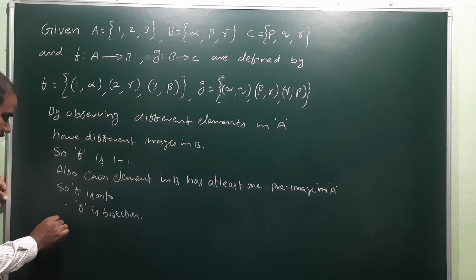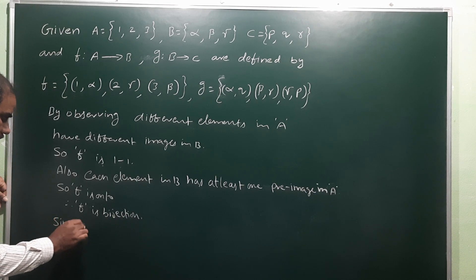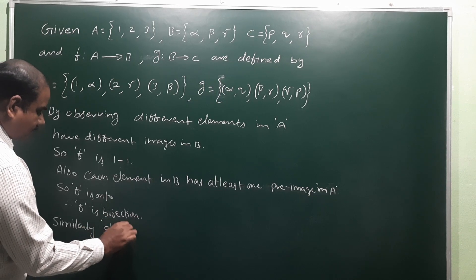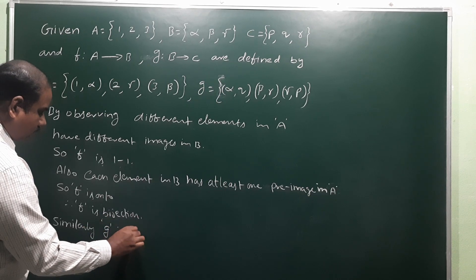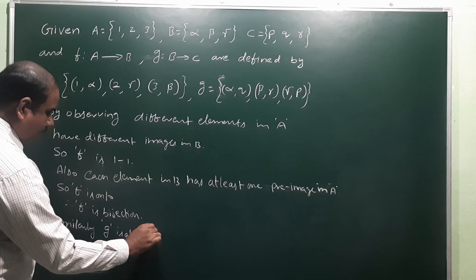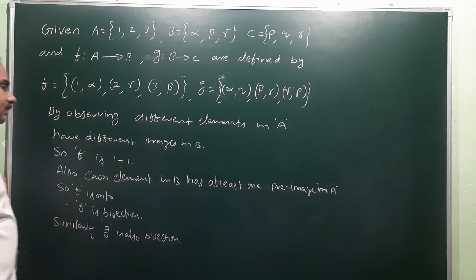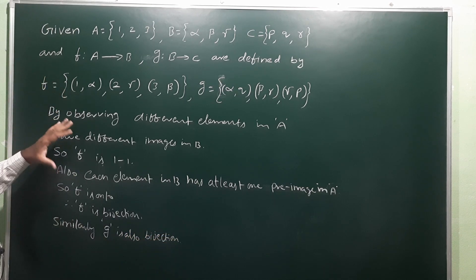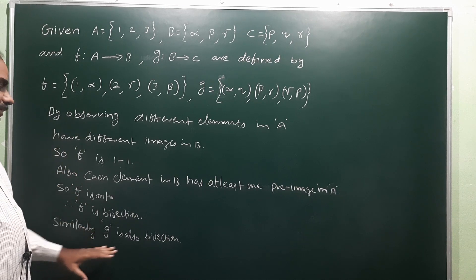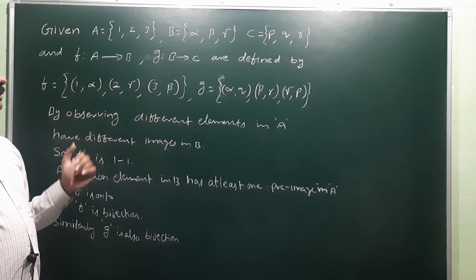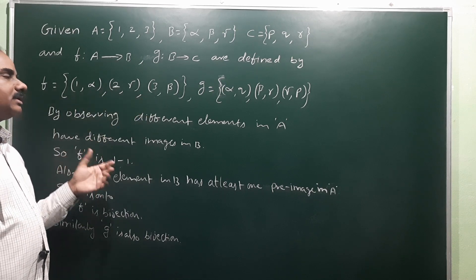The preimage of q is alpha, preimage of r is beta, preimage of p is gamma. So every element in the codomain has a preimage, so g is onto. Similarly, g is also a bijection. Therefore, f and g are bijections.